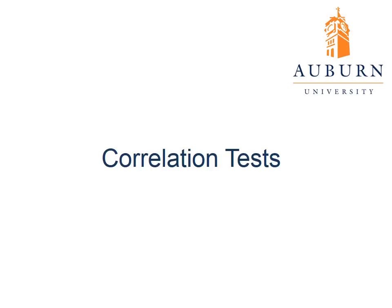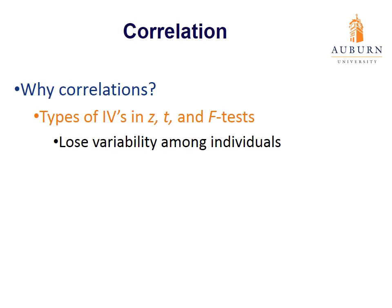Welcome students to the first lecture for Module 6. Module 6 is the last lecture of the semester, so we're almost finished. We'll cover two topics in this module: correlations and regression. We'll first start off with this lecture talking about correlation. You've probably heard about correlations before, but we'll add a few new things, especially within a statistical context.